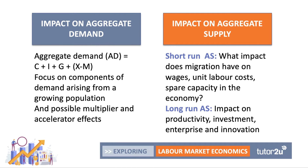For aggregate supply we can make a distinction between short-term effects — for example, what impact does migration have on wages, on unit labor costs in different industries, on spare capacity in the economy — and longer-term effects. Crucially, we'd probably consider in more detail the impact of migration on things like productivity, on investment by businesses and government, on enterprise and on the rate of innovation. We'll try and say something about that in this video too.